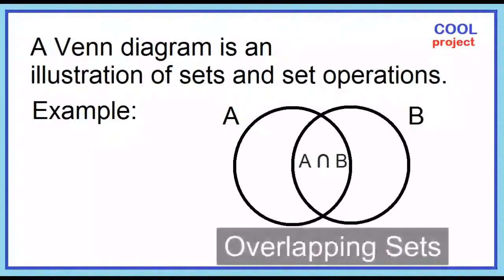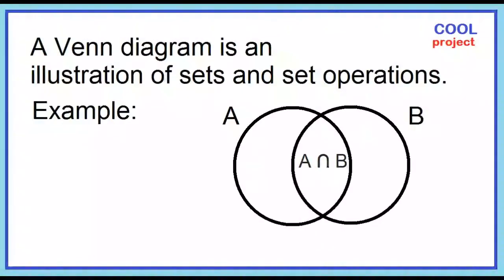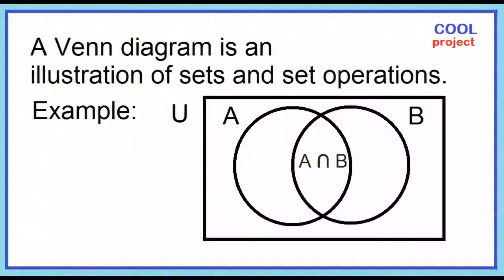Sets A and B are said to be overlapping if they contain at least one element in common. A rectangle represents a universal set. Let's study Venn diagrams that have two overlapping circles.